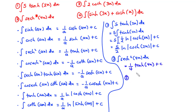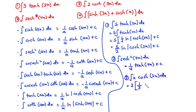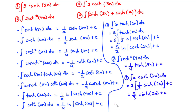Now let's move on to question 3. We have the integral of 2 cosh 3x dx. The 2 comes outside, and when you integrate cosh ax you have 1 over a times sinh ax plus c. So this becomes 2 over 3 times sinh 3x plus c.